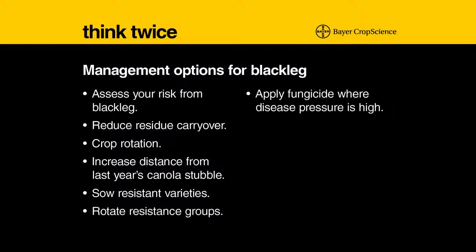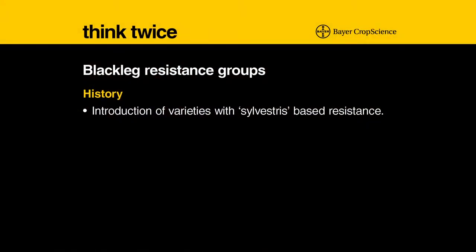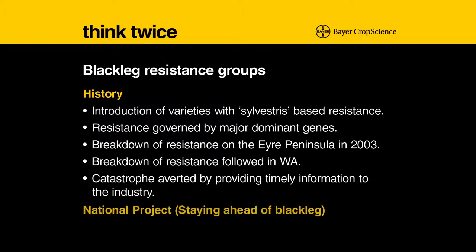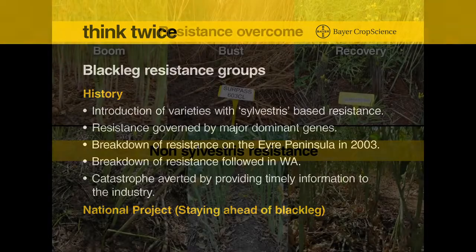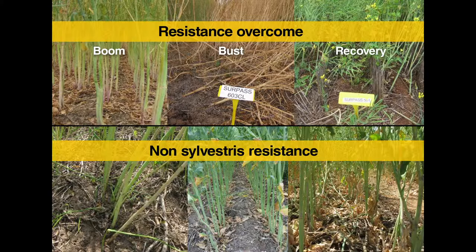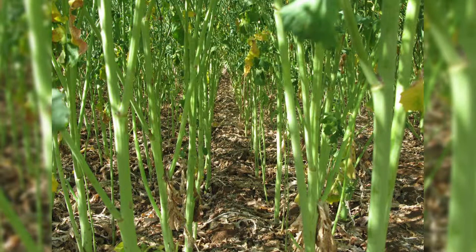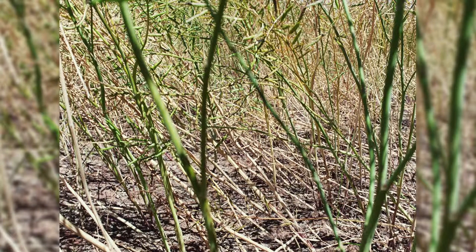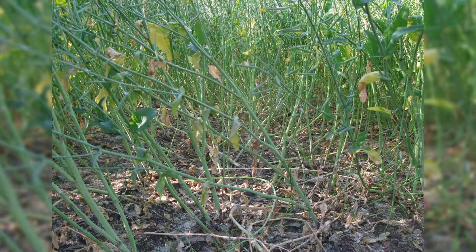Also apply fungicides where disease pressure is high. With the introduction of varieties with sylvestris-based resistance, the resistance was based upon a single dominant gene or two or three major dominant genes, which put a lot of selection pressure on the blackleg fungus. As a result, the resistance broke down on Eyre Peninsula in 2003. We noticed in 2004 that resistance to blackleg had broken down in Surpass and other varieties with sylvestris-based resistance. Farmers were timely advised and stopped growing those varieties, and we just avoided a complete wipeout by doing that.